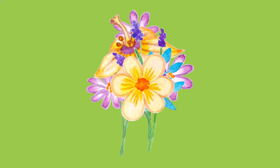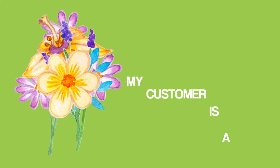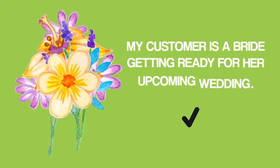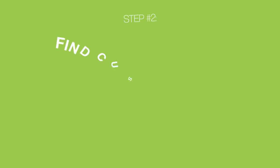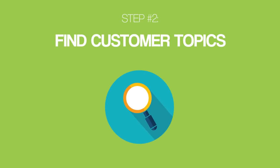All you need to do for this step is say, my customer is X. For example, if you run an online flower shop, you might say my customer is a bride getting ready for her upcoming wedding. That was easy, right? Now that you've identified your customer persona, it's time to find topics that your customer is interested in, which leads us to the next step in my keyword research blueprint: find topics that your customers care about.